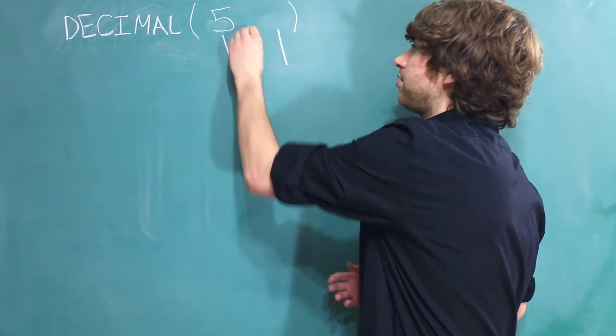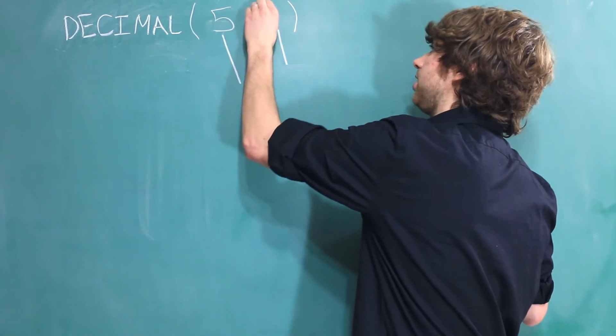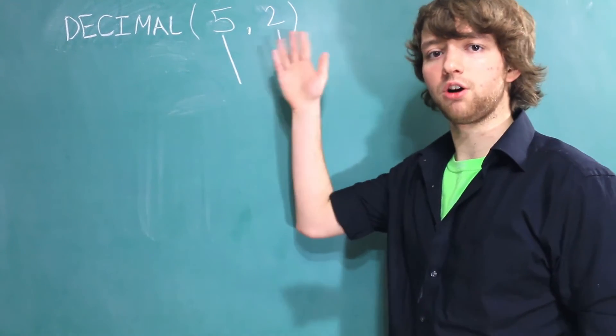The next number after the comma is the number of those digits that come after the decimal point. So for example, we could use the number 2. Now if we use these numbers on a column,